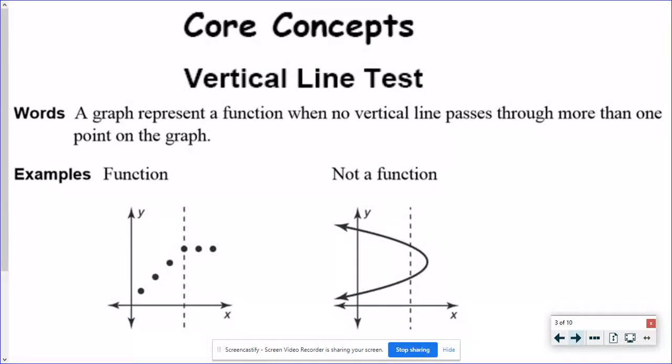So in this case, I could draw this vertical line right here and it's going to go through one point. I can even draw a vertical line where it doesn't touch it at all and that's okay. I just can't touch in more than one place. So in the second picture, when I draw this vertical line right here, it's going to touch right there and it's going to touch right there. If it touches twice, it is not a function. It fails the vertical line test.